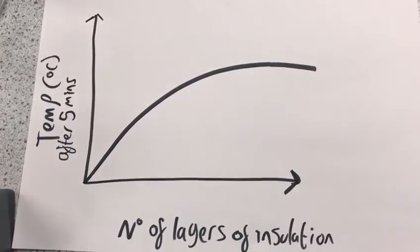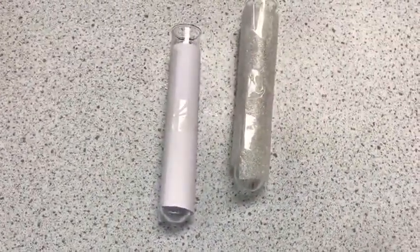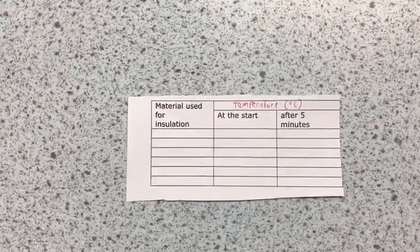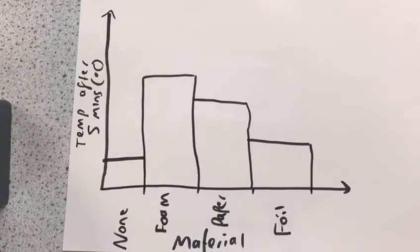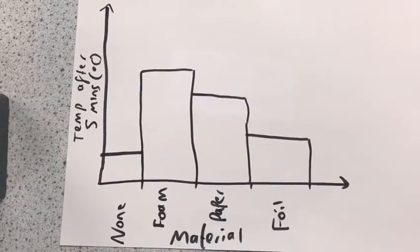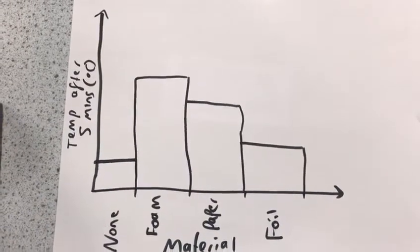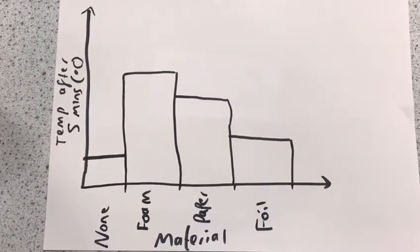Up to a point. The final thing you can do with this practical is try different materials — that is where paper and the foam layering comes in. If you start with the same starting temperature and record in a table, you can see how the temperature changes with different materials. Once you've done that you can plot it on a bar chart. This links in with the thermal conductivity section of energy. The higher the temperature after five minutes, the lower the thermal conductivity, which means it is a better insulator. Those are the three ways you can look at how energy is transferred through different types of thermal insulation.